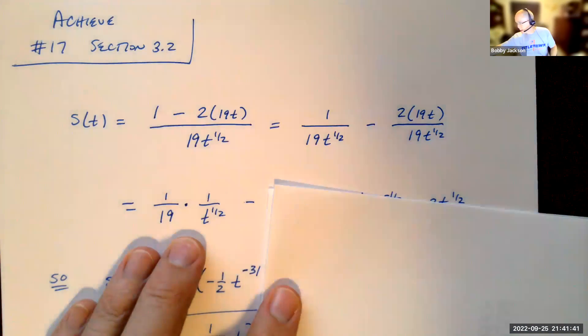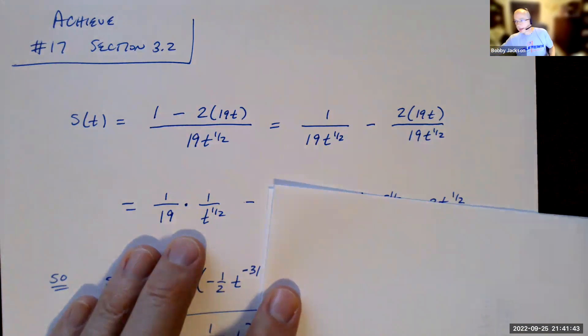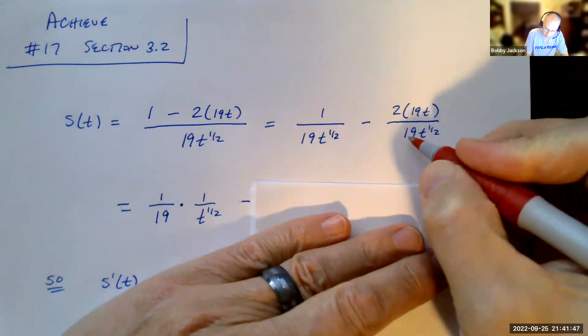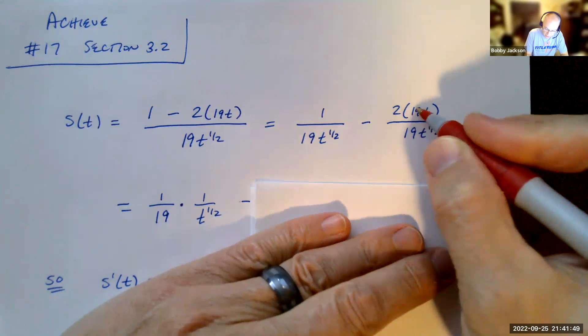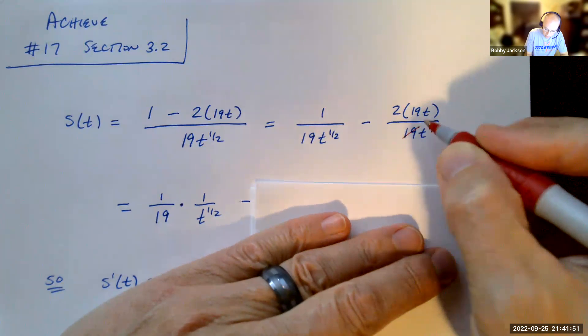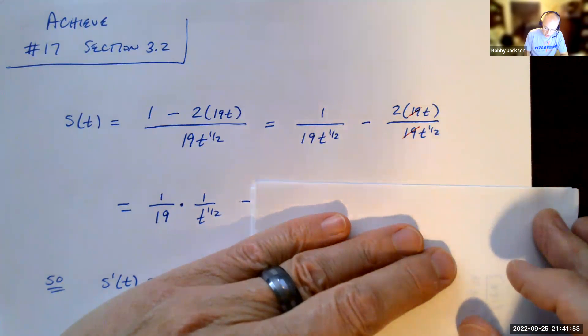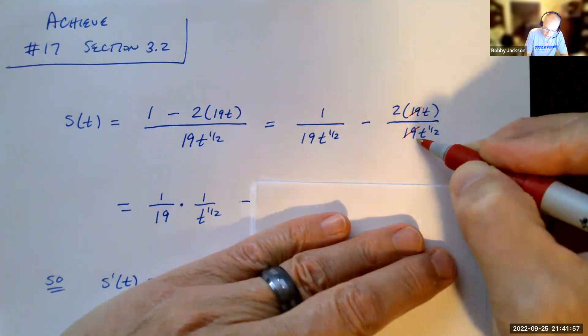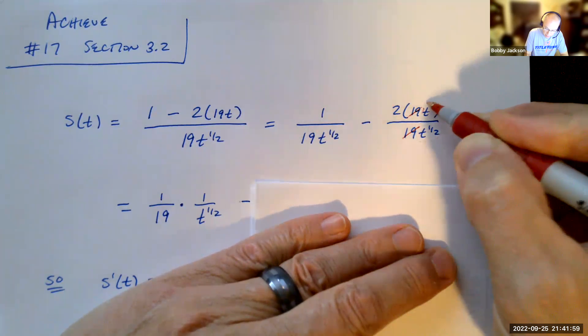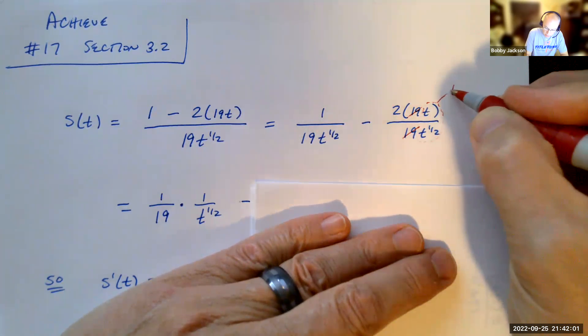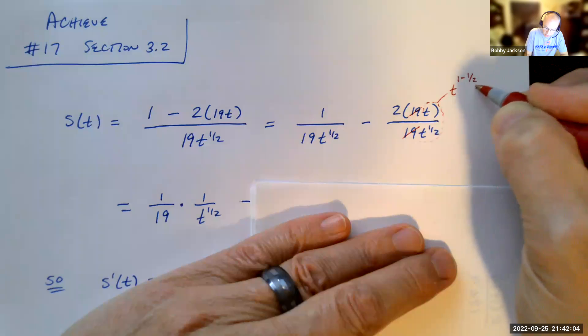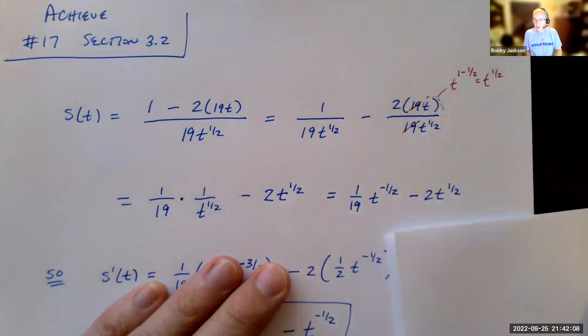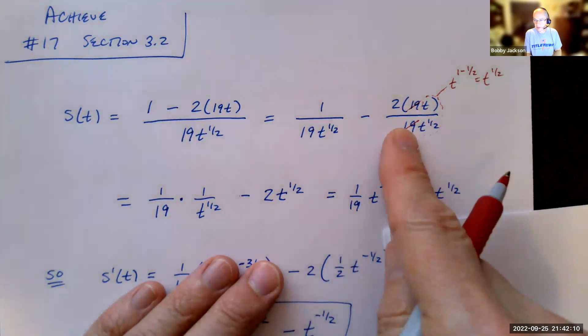Here, I can do some simplifying. I can indeed cancel the common factor of 19. So that's kind of maybe why they're thinking to write it this way. But if I divide top and bottom by 19, I get 2. And then what do I do with this portion here? Well, remember, if I'm dividing like bases to different powers, this would be t to the 1 minus 1/2, which is t to the 1/2 power. So I get 2t to the 1/2 power. That's what that simplifies down to.